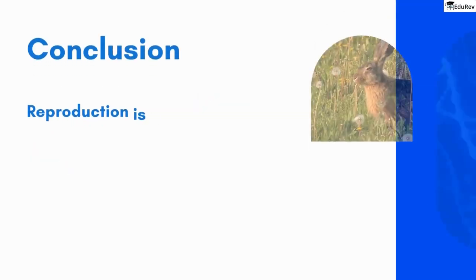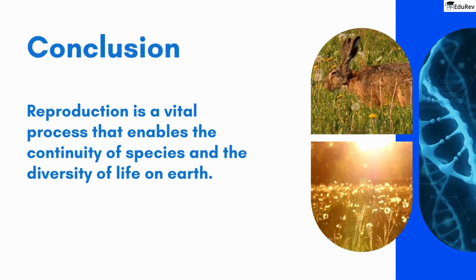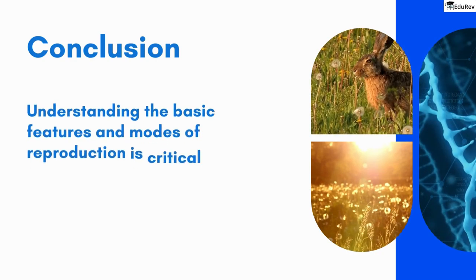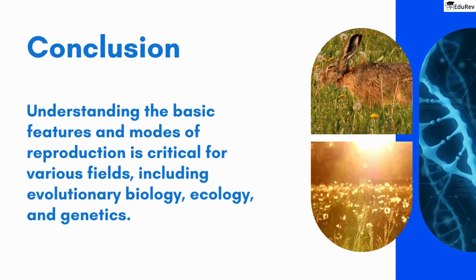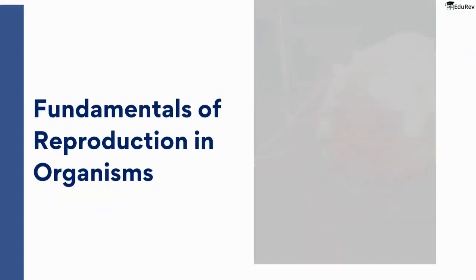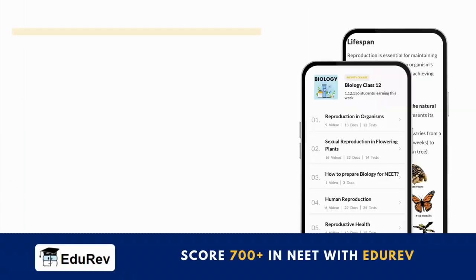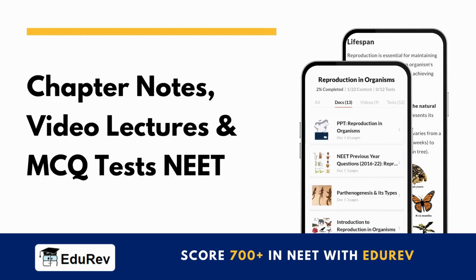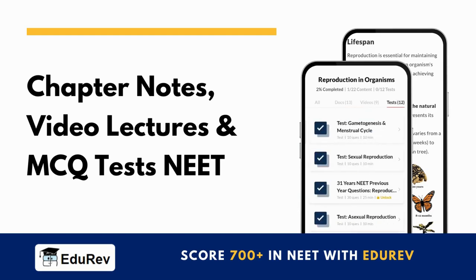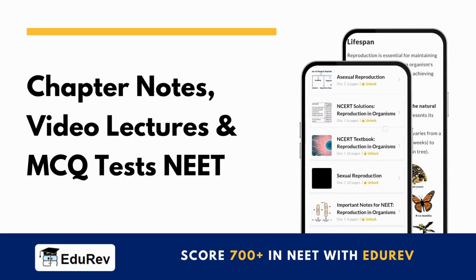In conclusion, reproduction is a vital process that enables the continuity of species and the diversity of life on Earth. Understanding the basic features and modes of reproduction is critical for fields including evolutionary biology, ecology, and genetics. We hope this video has provided a better understanding of the fundamentals of reproduction in organisms. You can study effectively with the EduRev app through chapter notes, video lectures, and NCERT-based MCQ tests — available for all chapters of Class 11 and 12 biology for your NEET preparation.